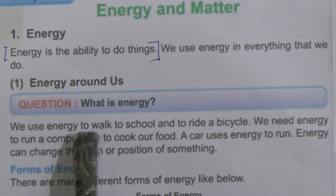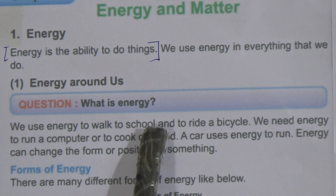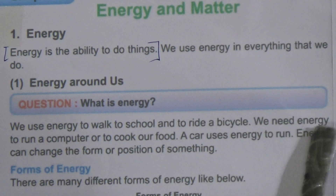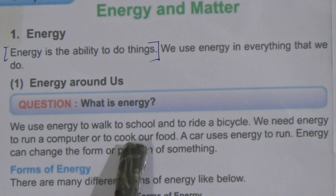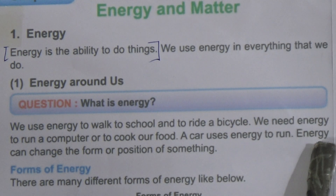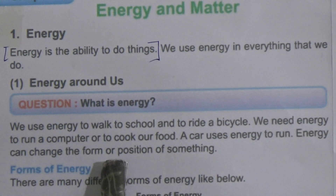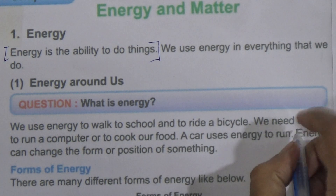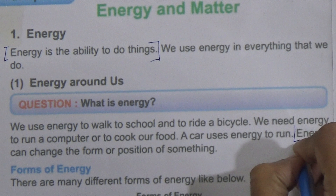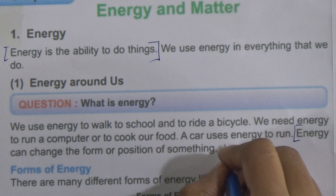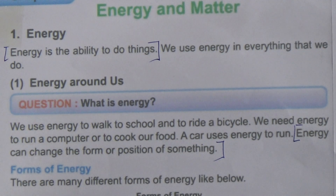We use energy to walk, to work, to go to school, and to ride a bicycle. We need energy to run a computer or to cook our food. A car uses energy to run. Energy can change the form or position of something. That means energy is the ability to do things, and energy can change the form or position of something.